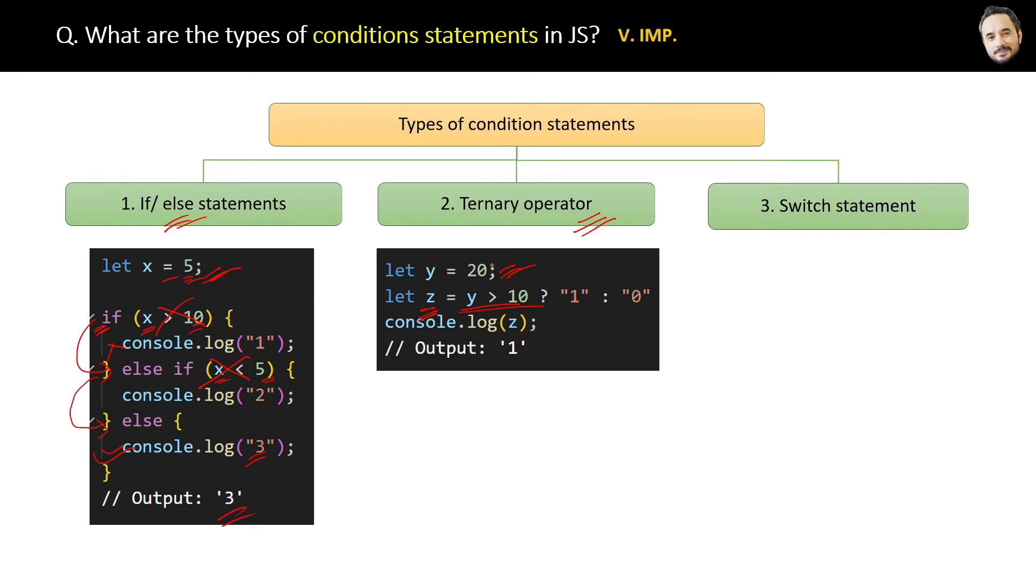So this is a condition. In this case, y equals 20, so the condition is true. And if the condition is true, then the first value just after this question mark will be the result.